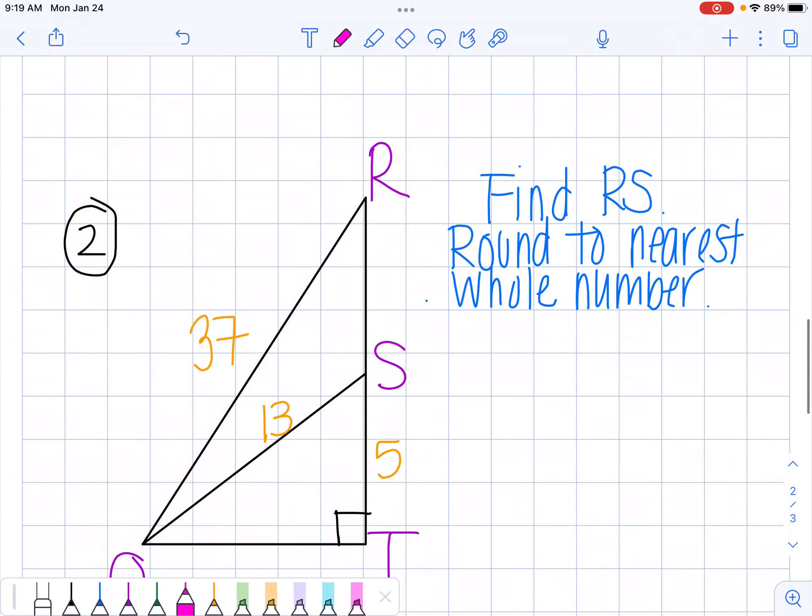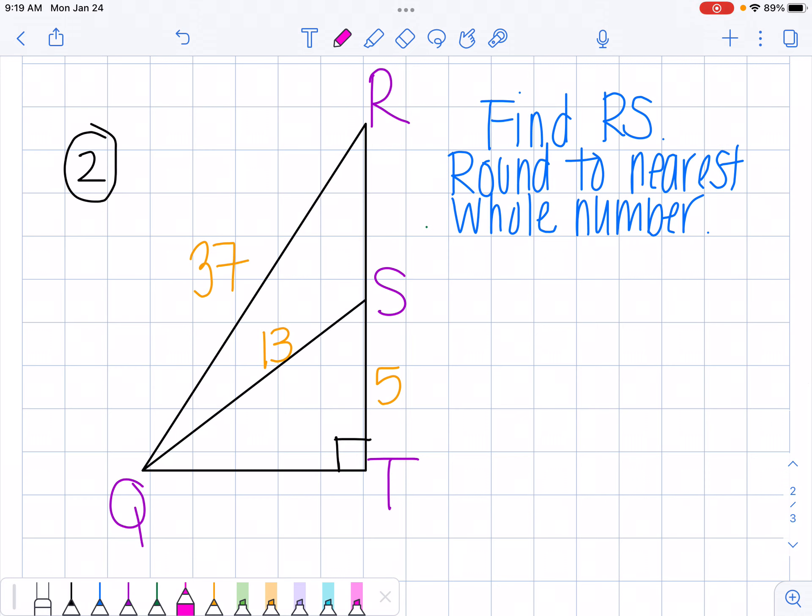Now I have another example for you. This one is a little bit different on how the right triangles are drawn, but still the same concept. So this time they want me to find RS, which is this side right here. I'm going to ultimately call x because that's what I'm trying to find.